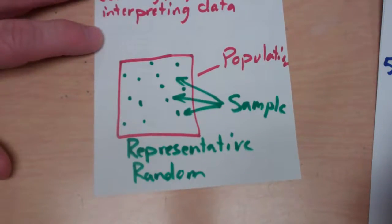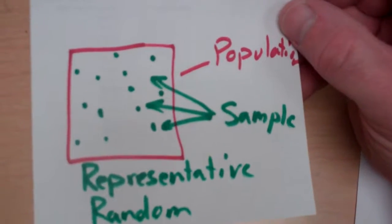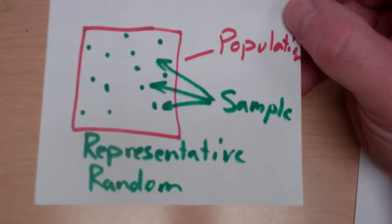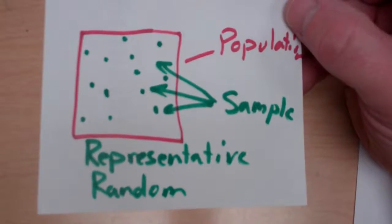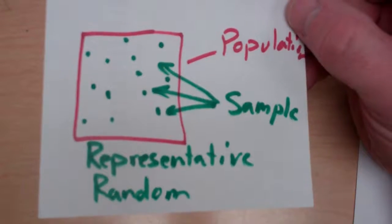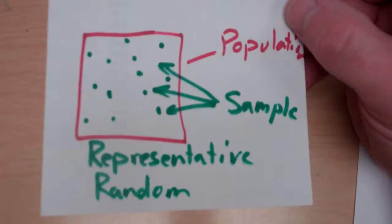A couple words that you need to be aware of as we do this. The population. The population is the group being studied. So, for example, you might take the population as being our middle school. So if our middle school or our 7th grade middle school building was the population, we'd be talking about the entire group of students.